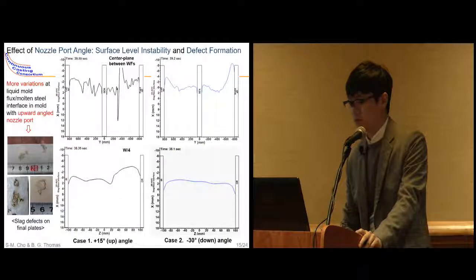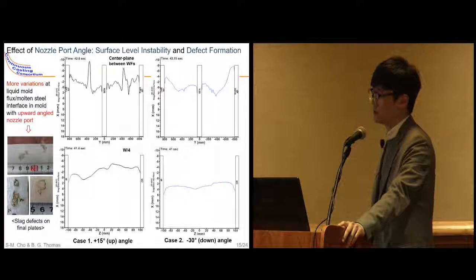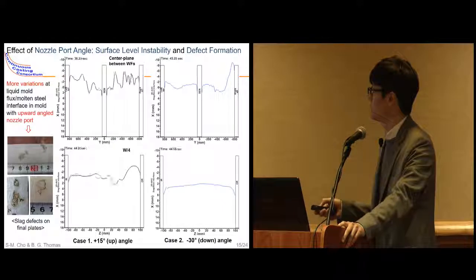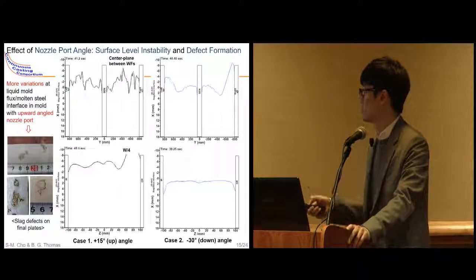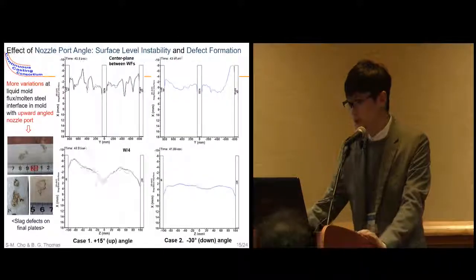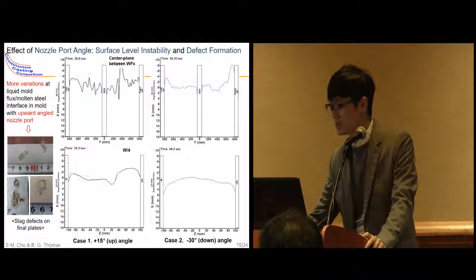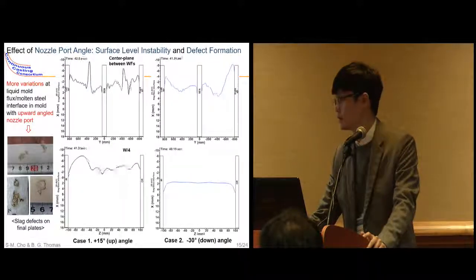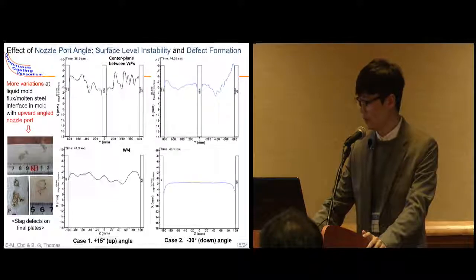These four videos show the transient slag and steel interface profile in the mold: front view (wide face view) and side view (narrow face view) for both the upward and downward nozzle port angle cases. For the upward angle case, severe level fluctuation exceeding 10 mm is shown on the wide face — a very large number from the perspective of process control. This can cause slag entrainment into the solidifying tissue.